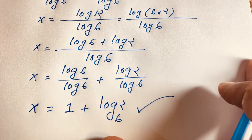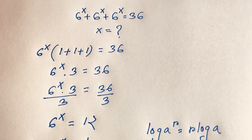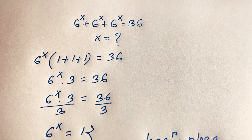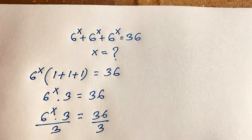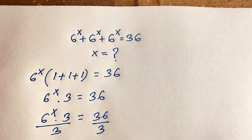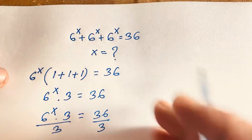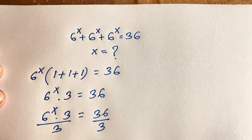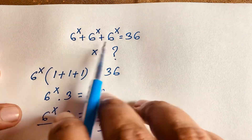This is our final answer in this exponential equation. Let's check our question: 6 to the power x plus 6 to the power x plus 6 to the power x is equal to 36.